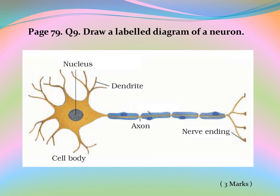Page 79, Question 9: Draw a labeled diagram of a neuron. See the picture and understand the positions of nucleus, dendrite, axon, nerve ending, and cell body in the diagram.